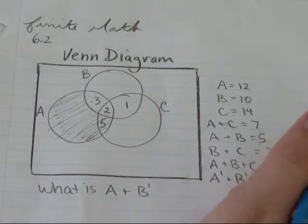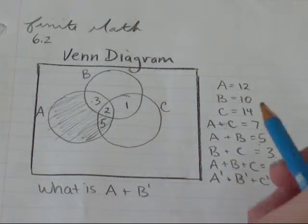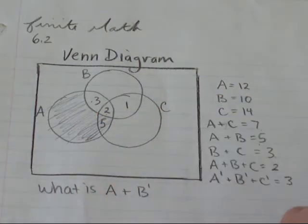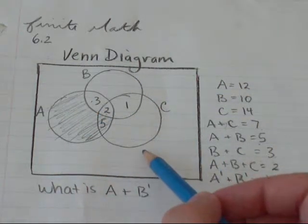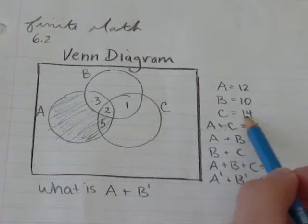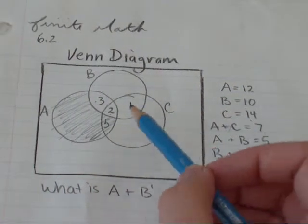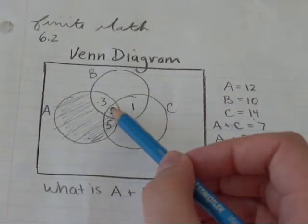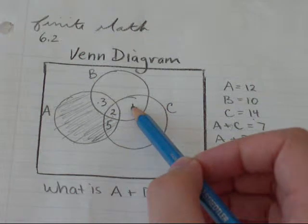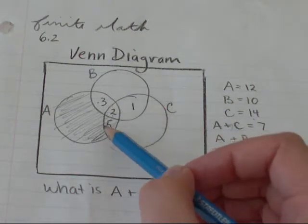The next thing I'm going to do is fill in the 3 main circles. So I know that what I have in the entire C is 14, but I already have 5, 6, 7, 8 from other places.